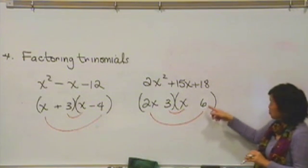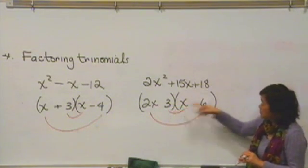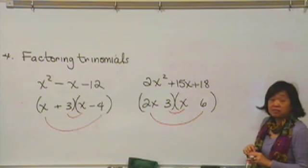The outside ones gives us 12. The inside ones give us 3. Sure enough, 12 and 3 will make 15.